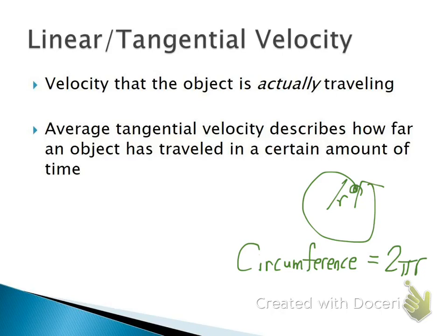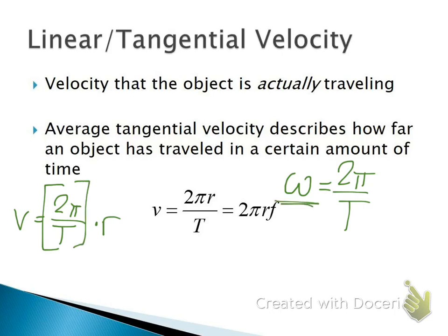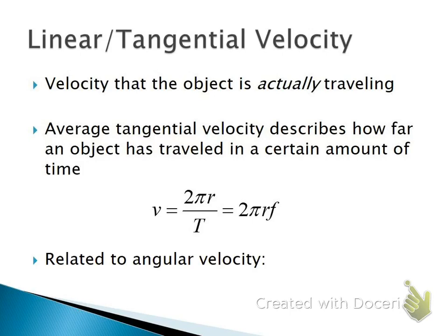So if linear velocity is how fast I'm traveling distance over time, well, I'm traveling a distance of two pi r meters around the circle over the course of one period, if I'm completing one circle. So that means my velocity can be described as two pi r over T or two pi r f. Now notice how very similar this equation looks to my angular velocity equation. Since omega equals two pi over T and v equals two pi r over T, well, I can take my velocity equation, rewrite it as simply two pi over T all times r, and then replace this two pi over T with omega. So I end up with v equals omega r, where r is the radius of revolution.